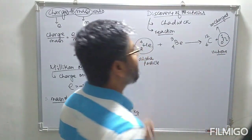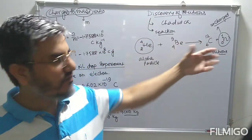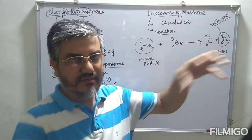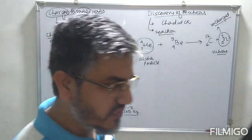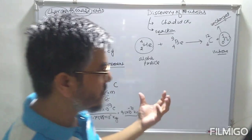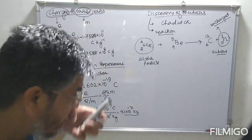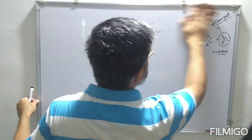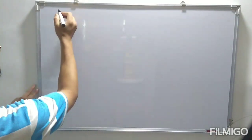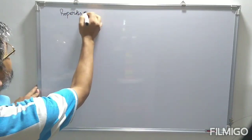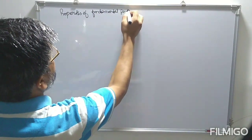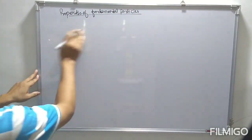So these are the fundamental particles — electron, proton, and neutron — and how they were discovered. Now combining all this information, let's look at the properties of these fundamental particles, including their masses.